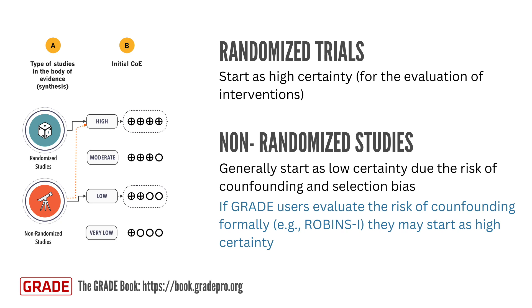However, if GRADE users evaluate the risk of confounding formally in non-randomized studies, they may start as high certainty. Although randomized controlled trials are the preferred source of evidence for assessing interventions, GRADE users often need to rely on non-randomized studies. These studies can complement trial data, provide information on outcomes not adequately captured by trials, or even replace trial data when they offer higher certainty of the evidence.